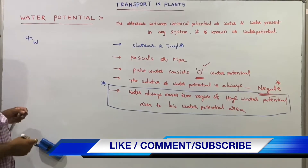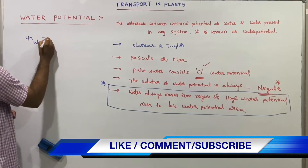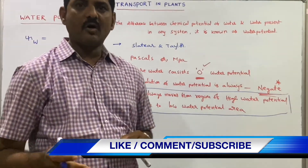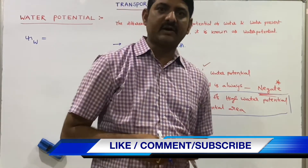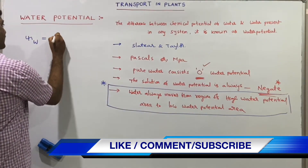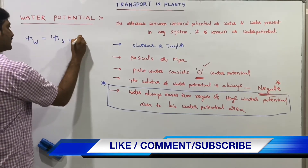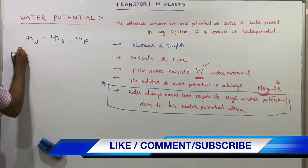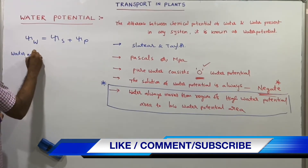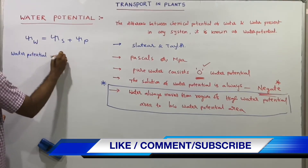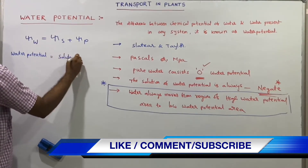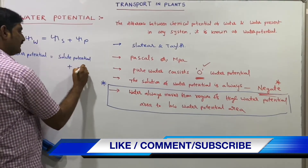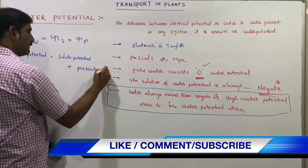ψw is the symbol for water potential. Solute potential and pressure potential are the components that determine water potential. The formula is: ψw = ψs + ψp, where ψs is solute potential and ψp is pressure potential.